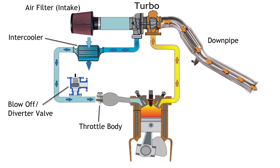If we take a look here at this picture, this gives you a brief overview of the major components in the system of a turbo car: the intake, the turbo, the intercooler, then your throttle body, blow-off valve or diverter valve, and then your intake manifold, exhaust, and downpipe.